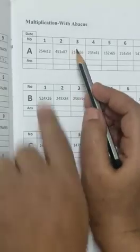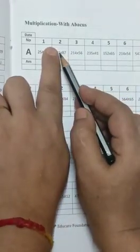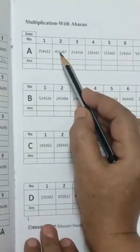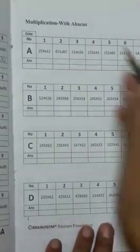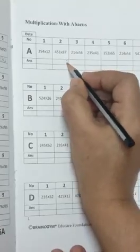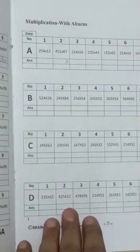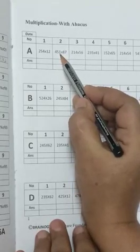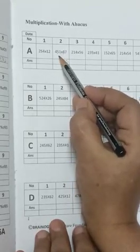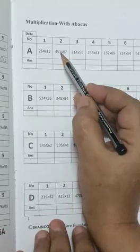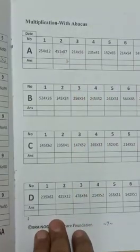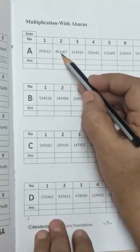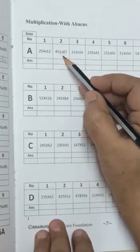So first we have to multiply it by right side numbers. So 7 and 1. 7 ones are 7. So we will write here 7. So in second step, we have to multiply it by 8 ones are 8, and 5 into 7. So 8 ones are 8.